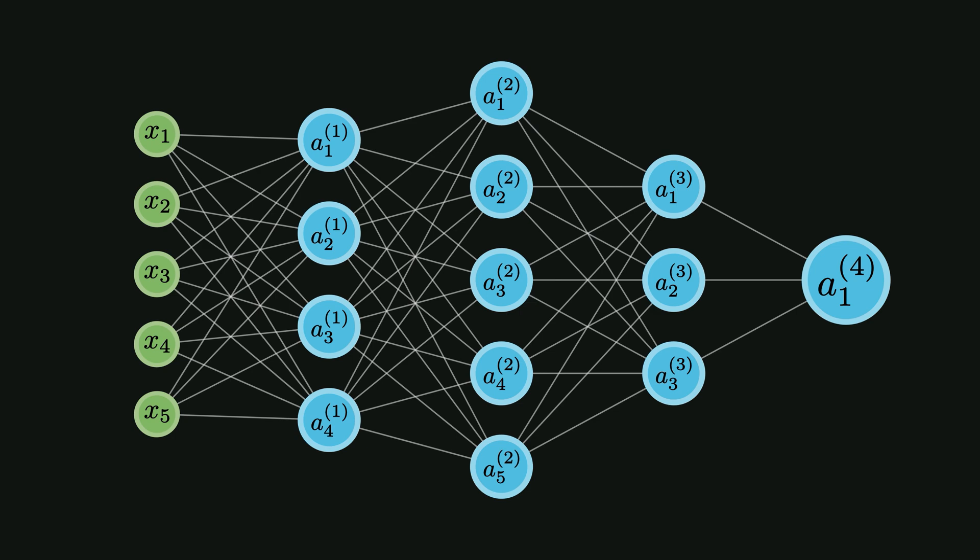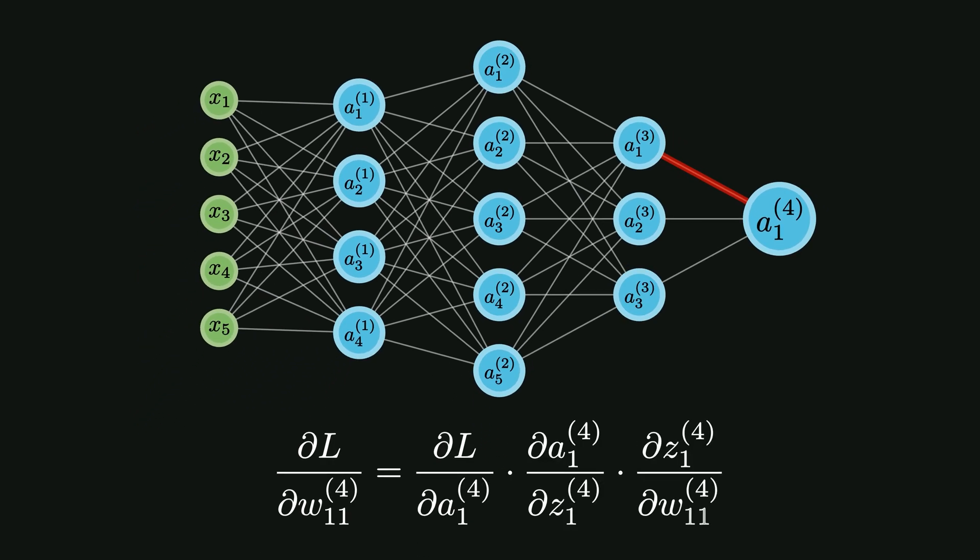Let's say we want to calculate the gradient for the first weight in the last layer. This gradient is calculated using the chain rule.